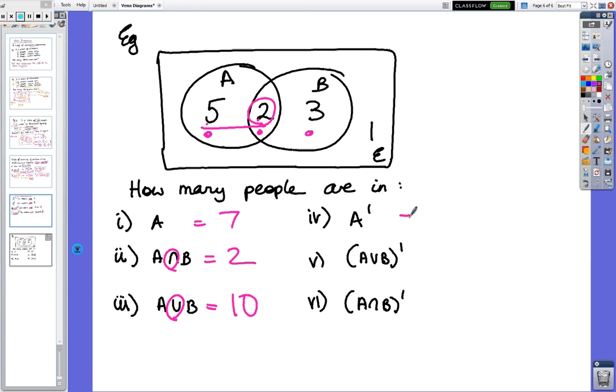Next one is not A, so there's A, so not A is those two people, so I've got 4. Next one, a little bit trickier, I've got A or B, so there's A or B, all those numbers, but I want the not, so there's A or B, so there's the not, which is the 1.